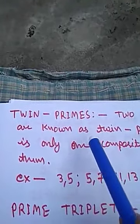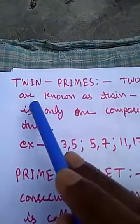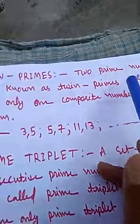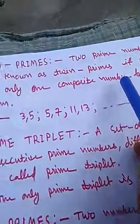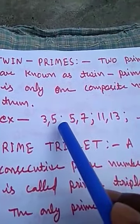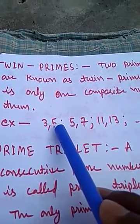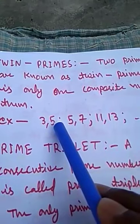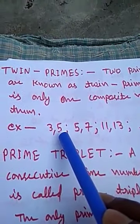Two prime numbers are known as twin primes if there is only one composite number between them. For example, 3 and 5 — 3 is a prime number, 5 is also a prime number, and between 3 and 5 there is only one composite number, which is 4. So 3 and 5 are called twin primes.